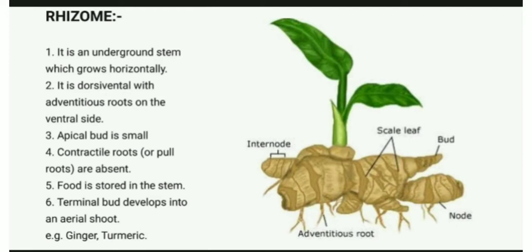It is dorsiventral — dorsally and ventrally differentiated. It bears adventitious roots on the ventral side and the apical bud is laterally small. It does not bear any contractile roots. Food is stored in the underground stem and the terminal bud develops into an aerial shoot.